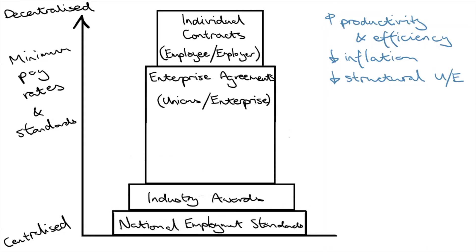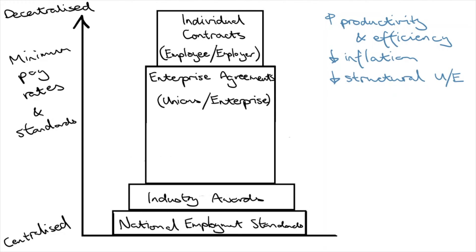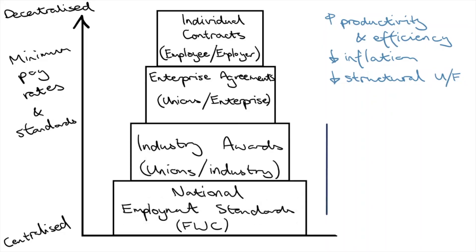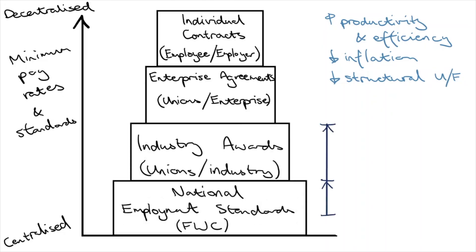In effect, this was lowering the safety net and shifting workers towards more decentralized contracts. The economy enjoyed the above benefits of decentralization, but there was a lot of backlash from low-skilled workers. As a result, Australia had a slight shift back to more centralization as the Fair Work Act was introduced in 2009 and some safety nets were reintroduced.